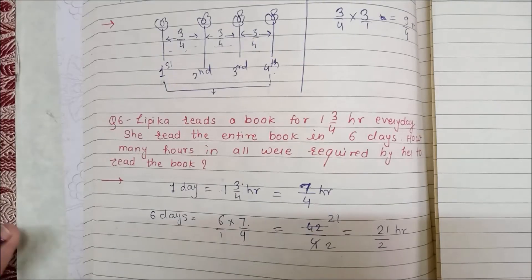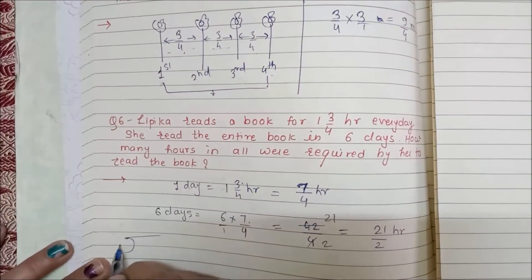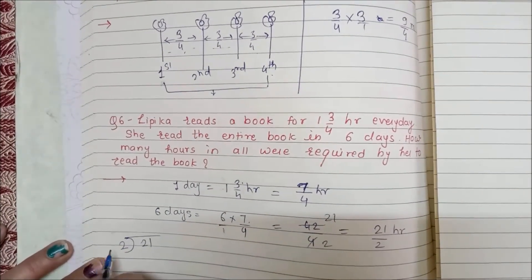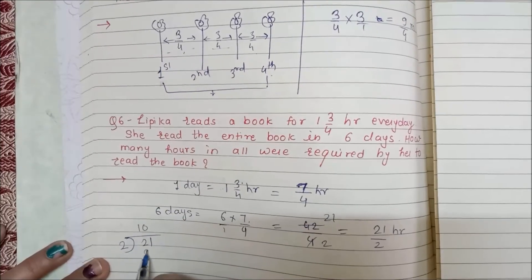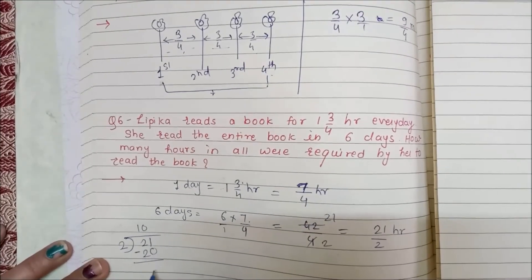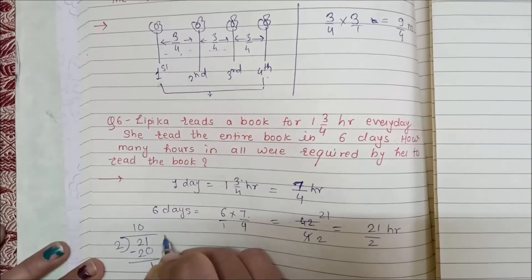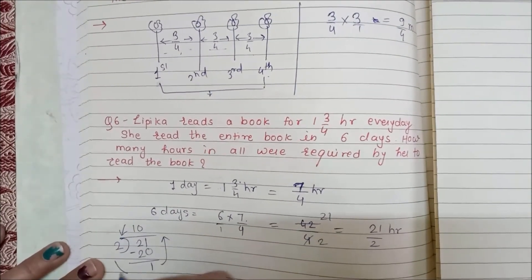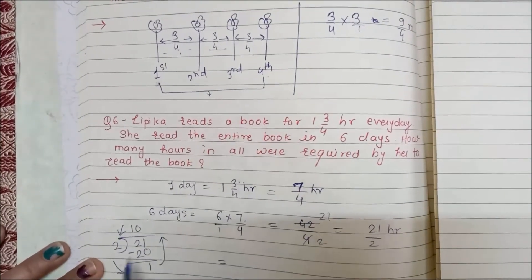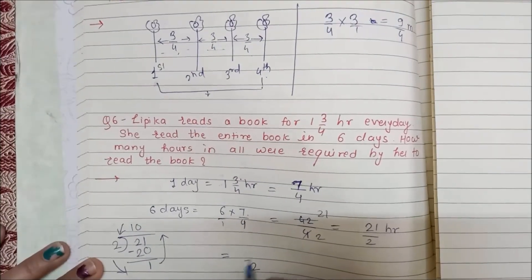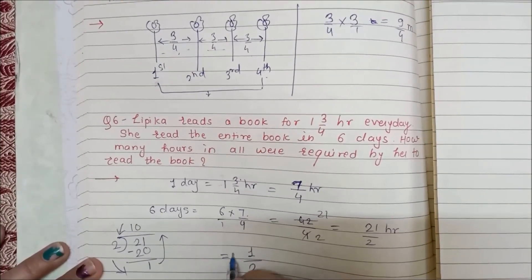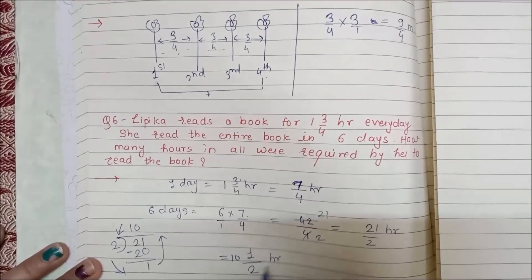For this, we will find out the division. We will interchange positions, and this mix fraction will come. So 10 1/2 hours is our answer.